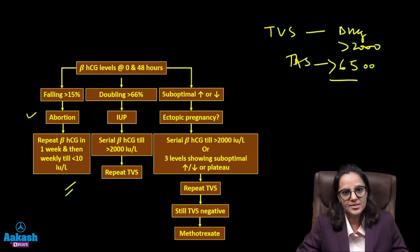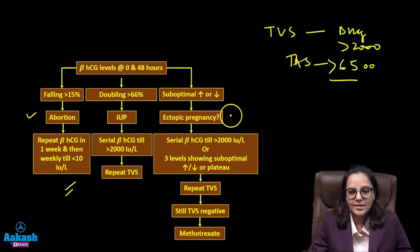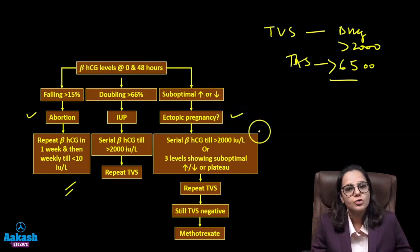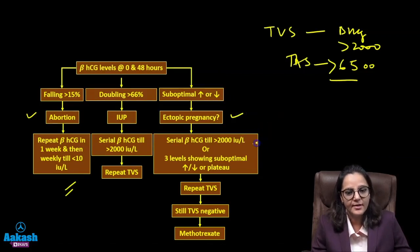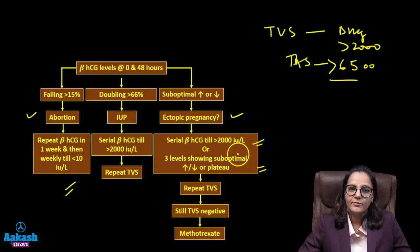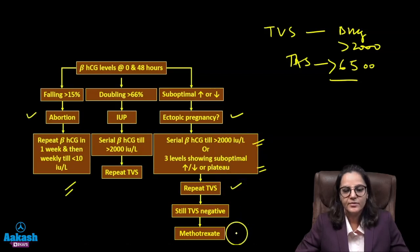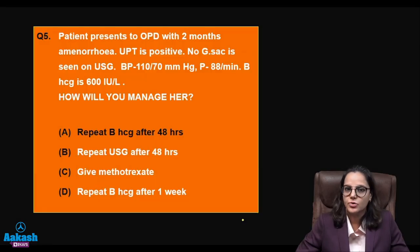The gray zone is when values are neither falling by more than 15% nor doubling by more than 66%. This most likely represents an ectopic pregnancy. Monitor serum beta-hCG until it reaches 2000 IU/L or plateaus. If three consecutive plateau levels are observed, or it reaches above 2000, repeat transvaginal sonography. If still negative, proceed with methotrexate.